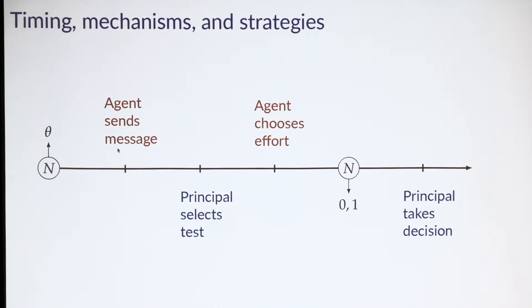Now that we have the timeline, let me define the formal objects. The principal has commitment power, so first selects a mechanism with three components: the message space M, a testing rule which assigns a test distribution to each message, and finally the principal takes a decision that's based on the message the agent sent, the test performed, and the result—either pass or fail.